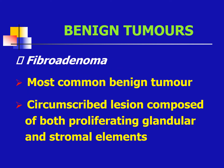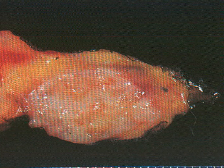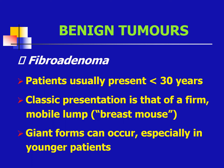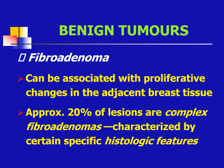We have benign tumors. The most common benign tumor is your fibroadenoma. It is a circumscribed lesion composed of both proliferating glandular and stromal elements. Patients usually present at less than 30 years old, and the classic presentation is that of a firm, mobile lump. Giant forms may occur, especially in younger patients. This can be associated with proliferative changes in the adjacent breast tissue, and approximately 20% of lesions are complex fibroadenomas characterized by certain specific histologic features.